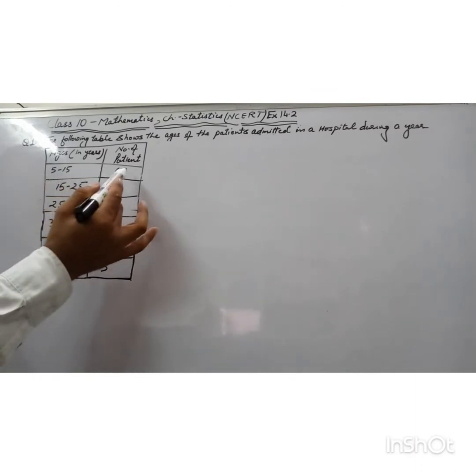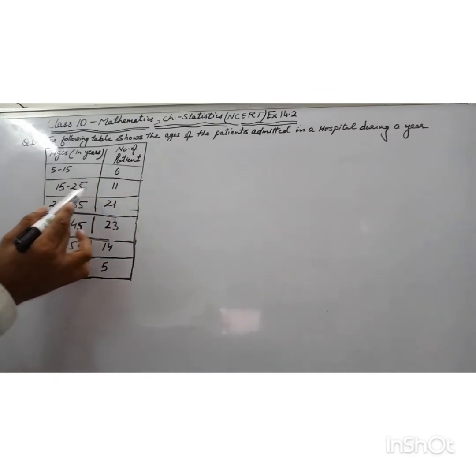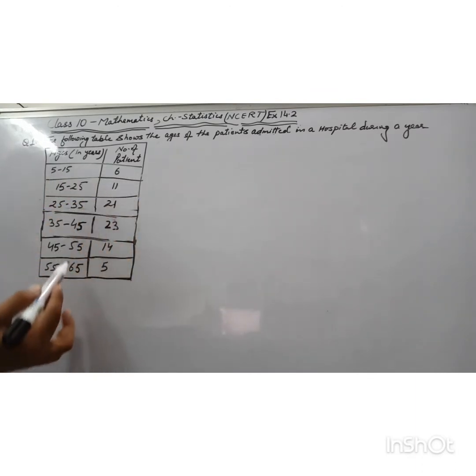Ages and number of patients: 5 to 15 years, 6 patients; 15 to 25 years, 11 patients; and so on; 55 to 65 years, 5 patients. We need to find the mode for this question.